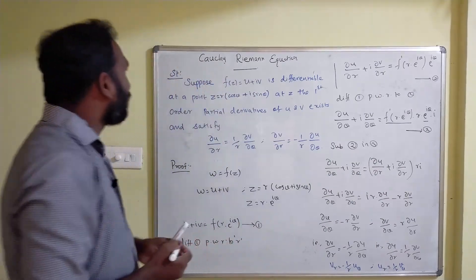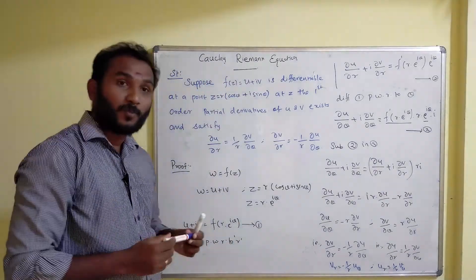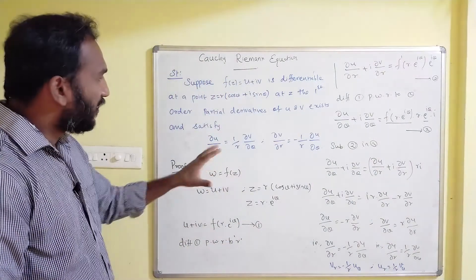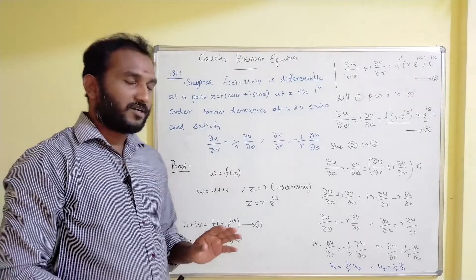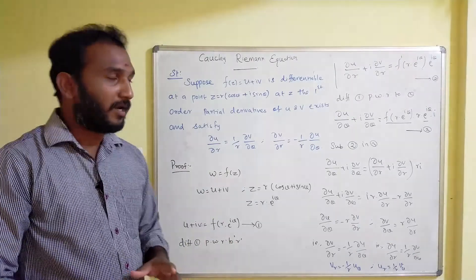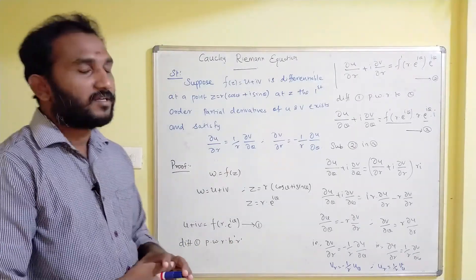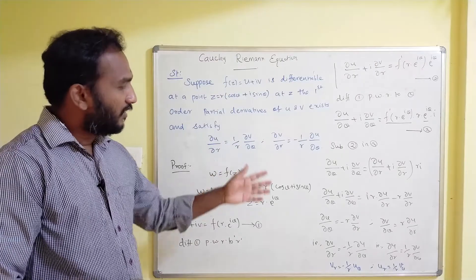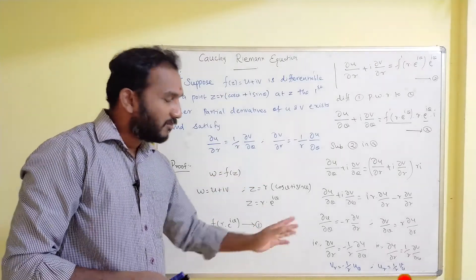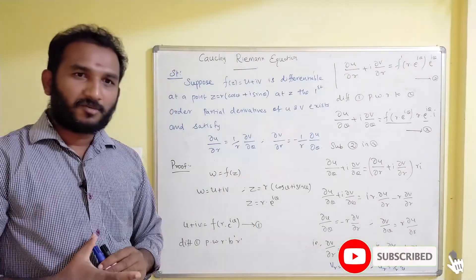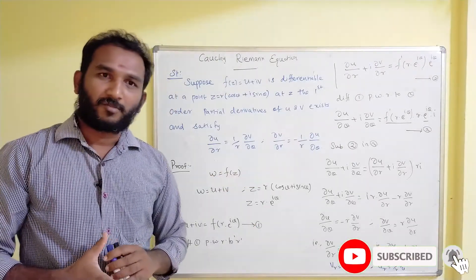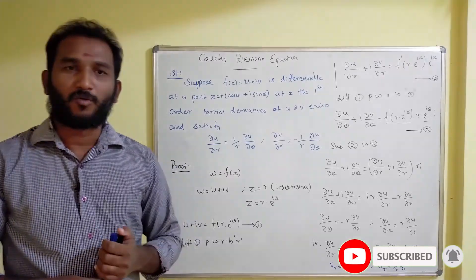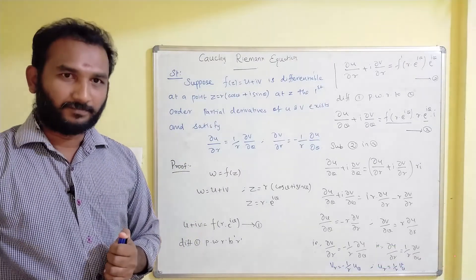This completes the proof of the Cauchy-Riemann equation for polar coordinates. In this video we have covered two things: the CR equation for Cartesian coordinates and the CR equation for polar coordinates. If you like this video, please subscribe to my channel for more updates. Thanks for watching.